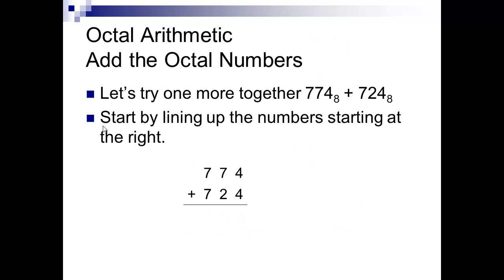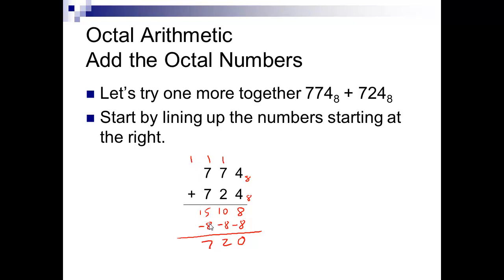Let's work on another octal example. We've got 7,7,4 and 7,2,4 — both base 8 numbers. So 4 plus 4 is 8 — 8 is base or larger, subtract 8, get 0, carry a 1. Then 7 plus 2 plus 1 is 10 — 10 is 8 or larger, subtract 8, left with 2, carry a 1. Then 7 plus 7 plus 1 is 15 — 15 is base or larger, so 15 minus 8 is 7, carry a 1. The carry comes down, giving us 1,7,2,0 in base 8.